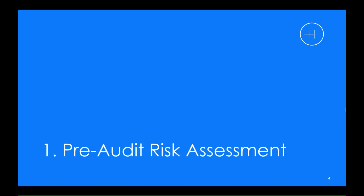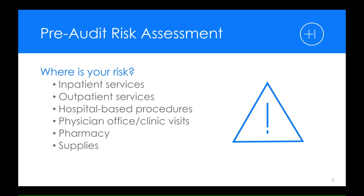Let's get started with the first item, which has to do with the pre-audit risk assessment. This essentially is going to deal with the various RAC issues and other audit issues that your organization might think about in relation to what you are facing. These items can be found on the regional RAC website, and the information can be helpful to determine your risk. For example, there are diagnosis codes that will be listed there.